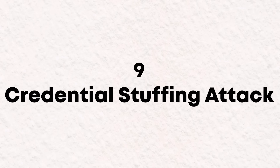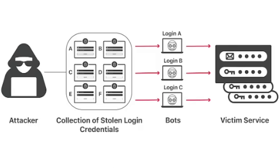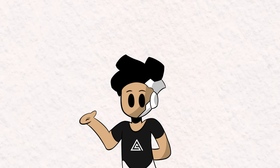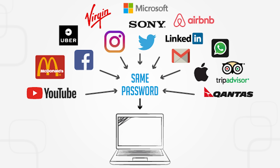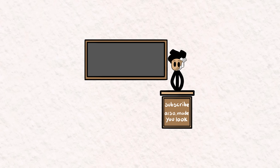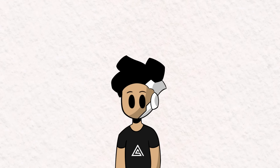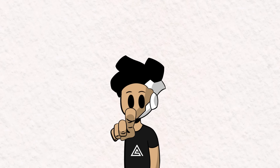Level 9: Credential Stuffing Attack. Credential stuffing is a type of brute force attack where attackers use already-leaked passwords to gain access to user accounts. What makes this attack so dangerous is that it relies on the fact that many people reuse the same password across various applications. Reusing the same password across multiple sites can turn a single security breach into a domino effect, compromising all your accounts at once. Treat your passwords like condoms — only use them once.